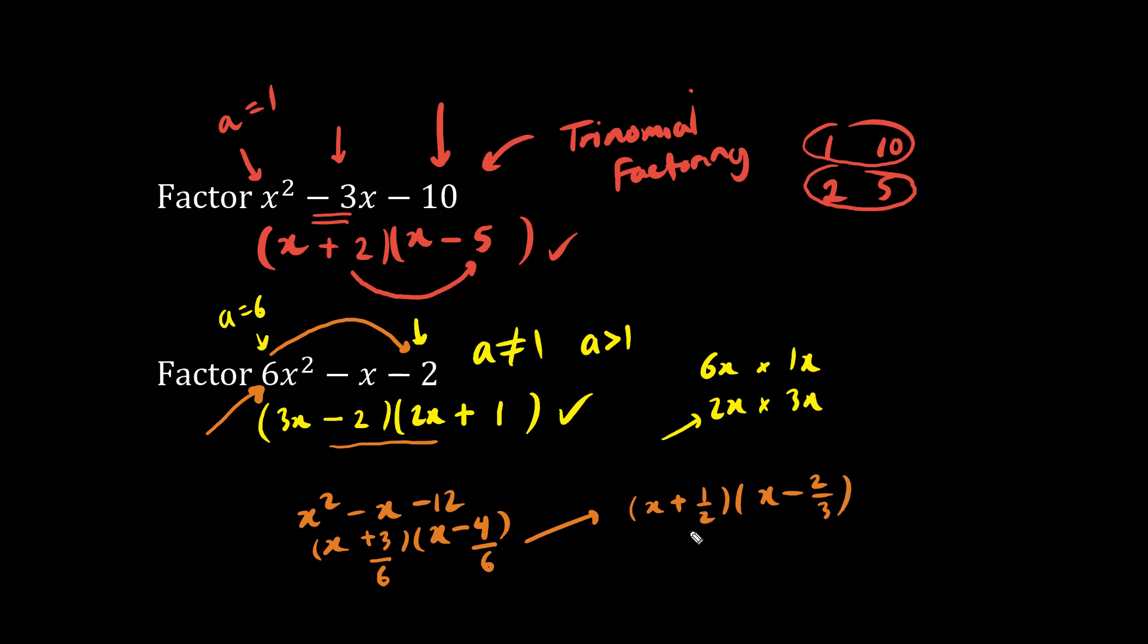And because this fraction is simplified already, we then promote the denominator in front of x. So we have 2x plus 1, and we have 3x minus 2, which is the same fully factored form.